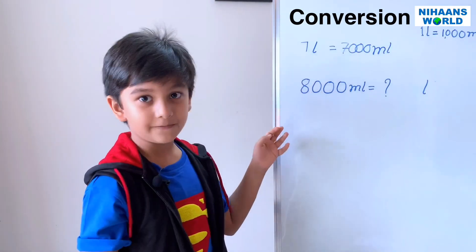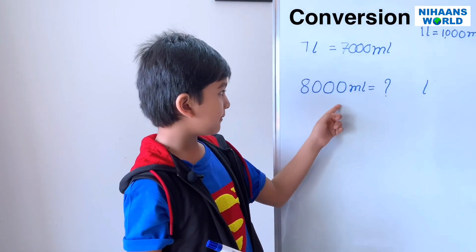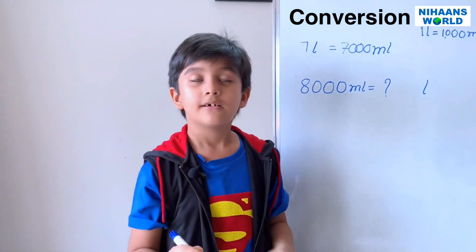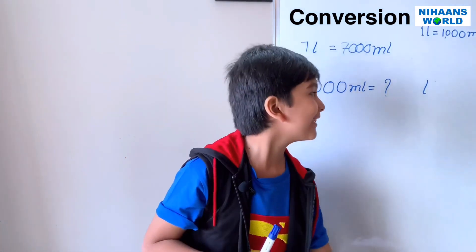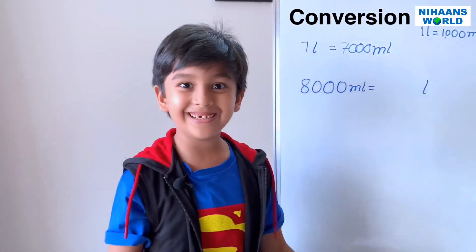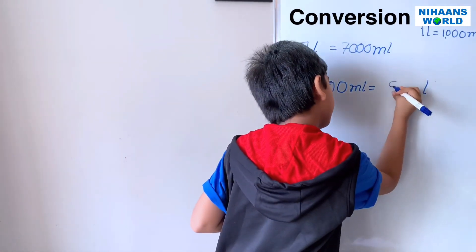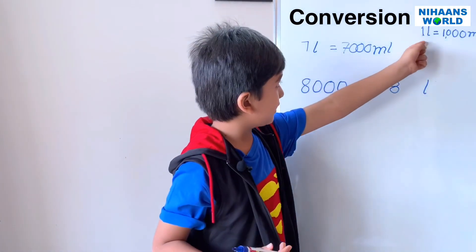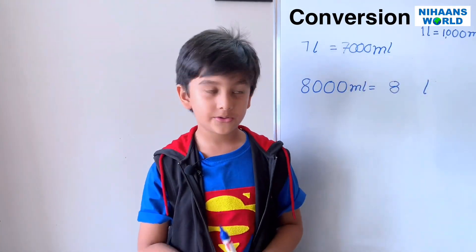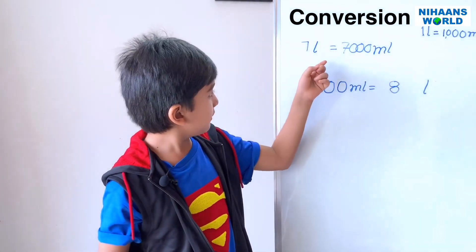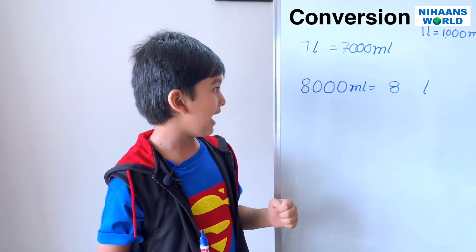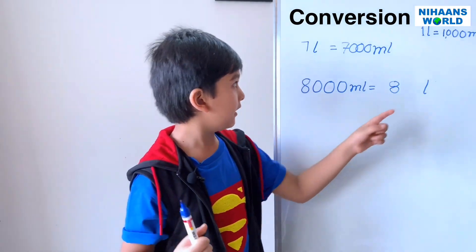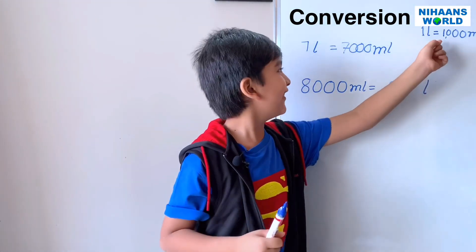Now let's solve the second example. Eight thousand milliliters is equal to how many liters? Can you tell me? You are right — it is eight. Friends, one liter is equal to one thousand milliliters, so seven liters is equal to seven thousand milliliters. And eight thousand milliliters is equal to eight liters, because one thousand milliliters is equal to one liter.